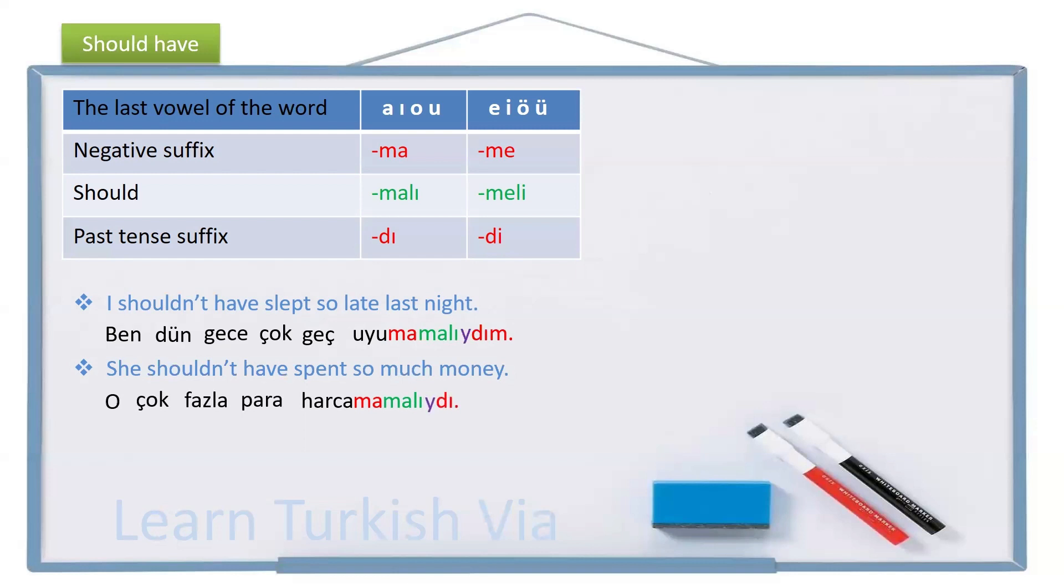Again, for he and she, we don't have person pronoun suffix. So, she shouldn't have spent so much money, o, çok fazla para, harcamamalıydı.